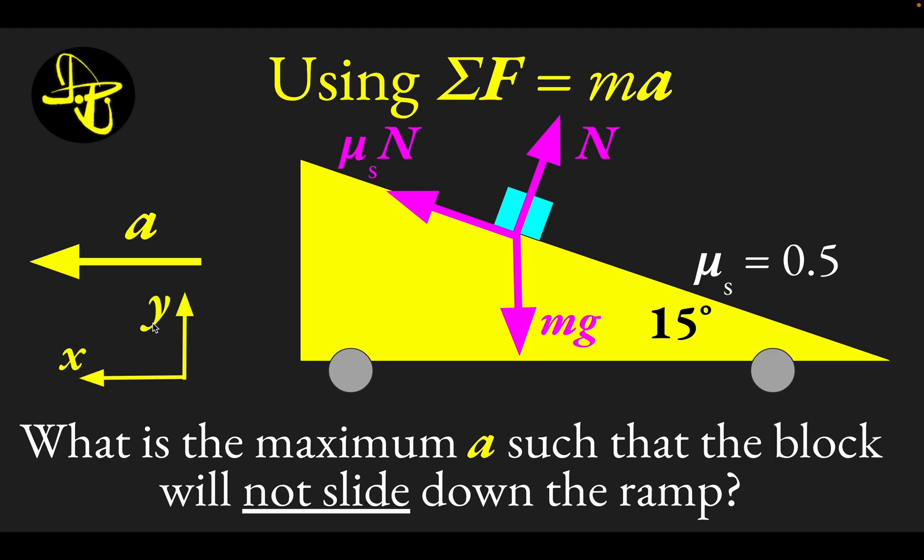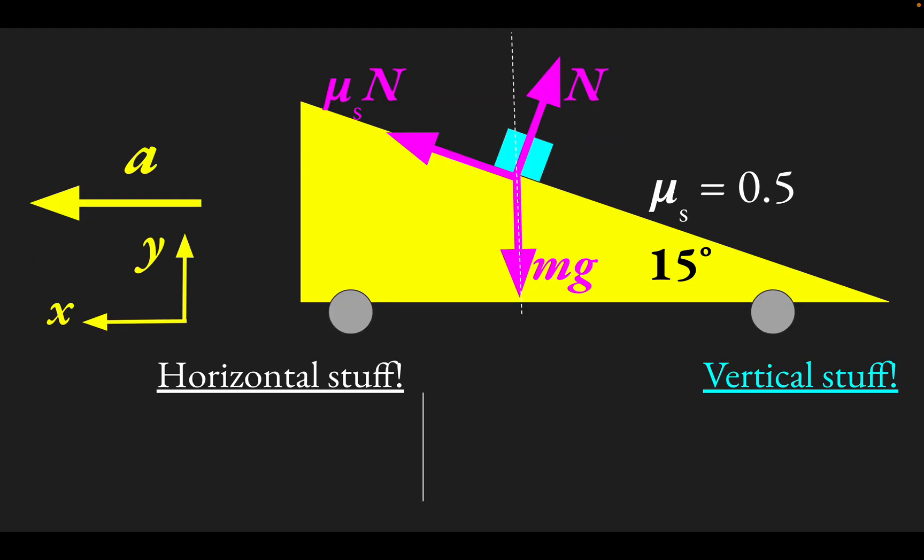What I am going to do here is align my x and y axes such that the acceleration of the system or the acceleration of this blue block is directly along my x-axis. So this blue block is just going to move horizontally to the left or accelerate horizontally to the left, and so that's why I'm going to orient my axes like this. And then what we need to do is do F equals MA along those directions.